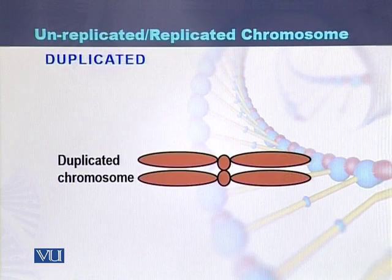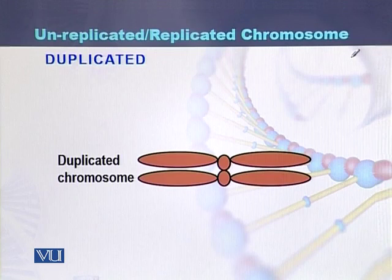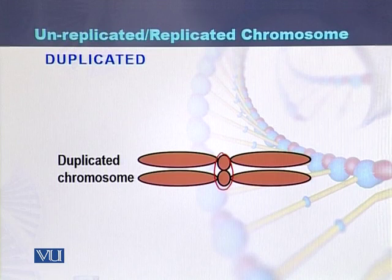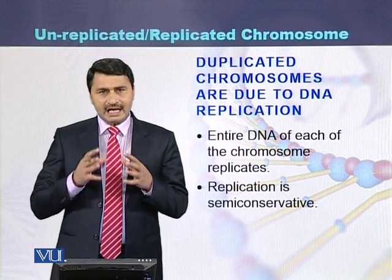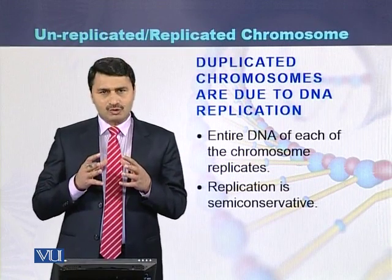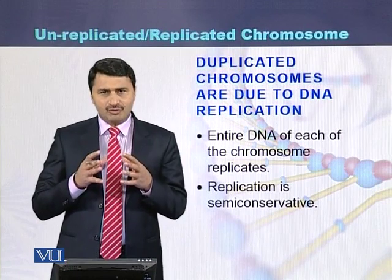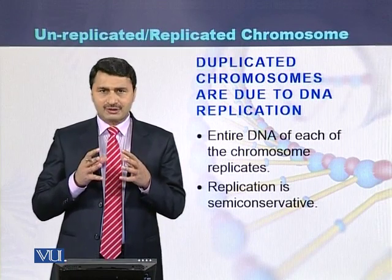In this diagram, this is the duplicated chromosome. In the case of a duplicated chromosome, in the middle there is the centromere, and two strands of the chromosomes are attached to it. These two chromosome strands are called sister chromatids. The entire DNA of the chromosome replicates before the process of mitosis.